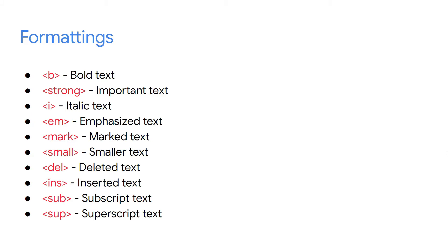As you already know, you can add a paragraph with the help of the p tag. Inside a paragraph, you can format that particular content. You can make it bold with the b tag, mark text as important with strong, use italic with i, and there are a lot more things you can use. We will deep dive one by one in the demo.